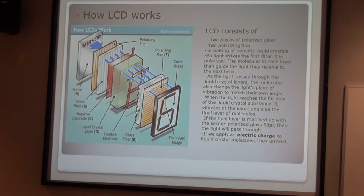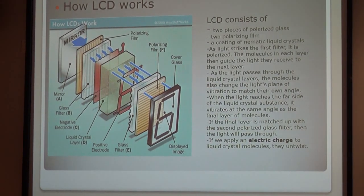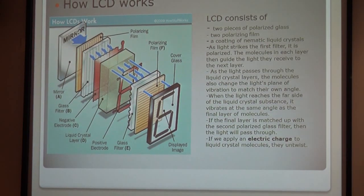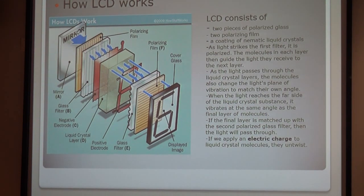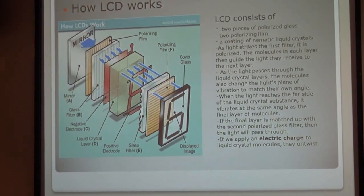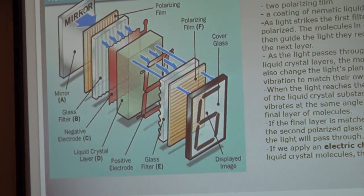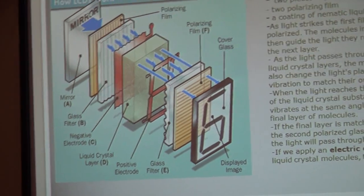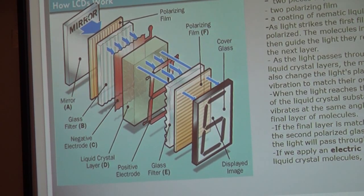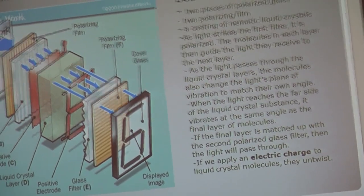This is the diagram of how the LCD works. As you can see, the LCD consists of two pieces of polarized glass and they have two polarizing film and a coating of nematic liquid crystal. So as light strikes the first filter, it is polarized. The molecules in each layer then guide the light they receive to the next layer. And as the light passes through the liquid crystal layer, the molecules also change the light plane of vibration to match their own angle.